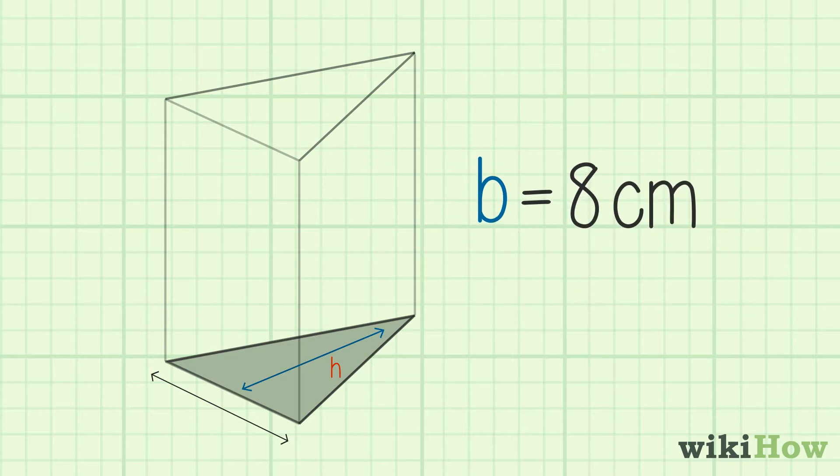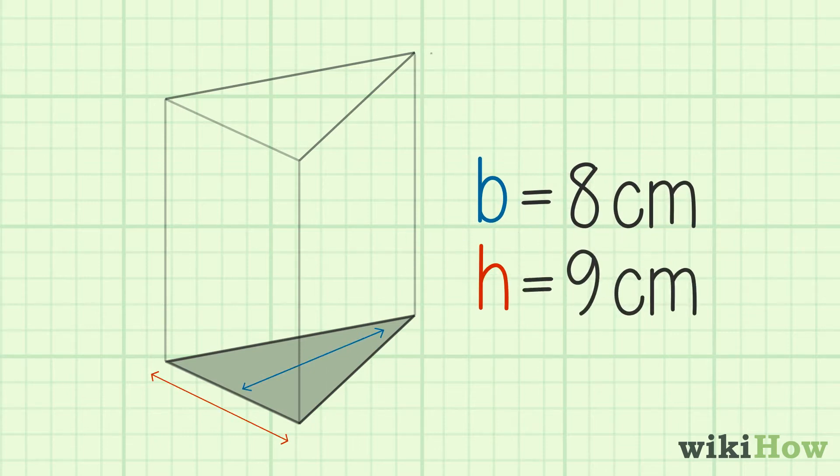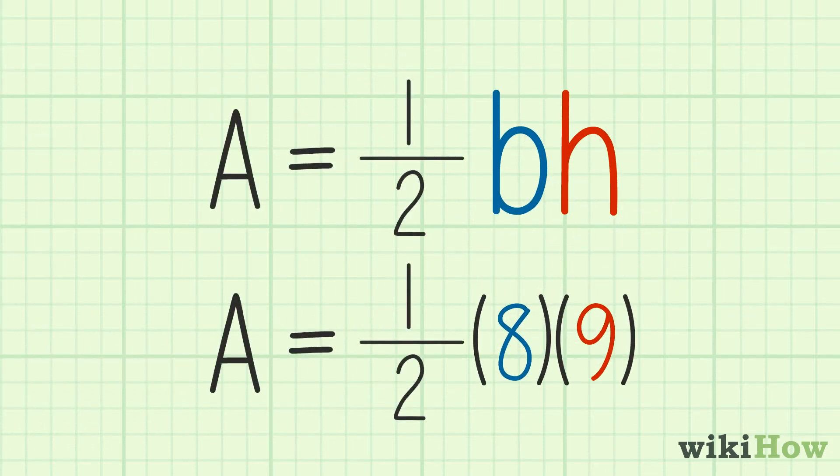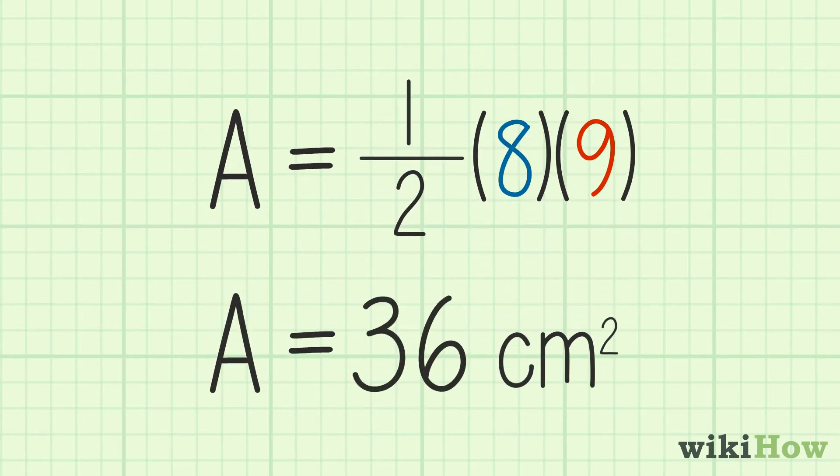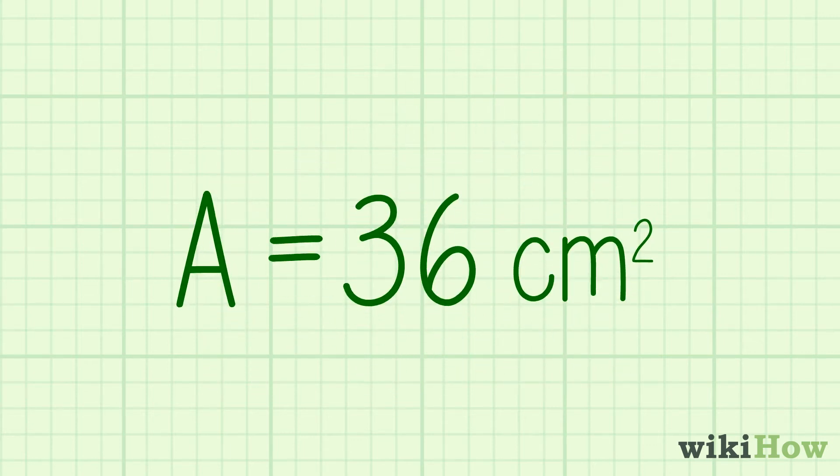For example, if the base is 8 and the height is 9, you would get one-half times 8 times 9 equals 36. Therefore, the area is 36.